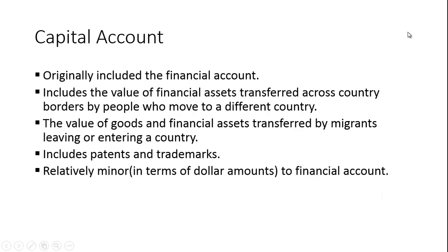Originally the capital account included the financial account. So if you're reading an older book or viewing an older video tutorial, sometimes they only refer to the current and the capital account because the financial account was included in the capital account. In the current version, the capital account includes the value of financial assets transferred across country borders by people who move to a different country — things like goods and financial assets transferred by migrants, as well as patents and trademarks. It's relatively minor in dollar terms compared to the financial account, as we'll see in the data table.